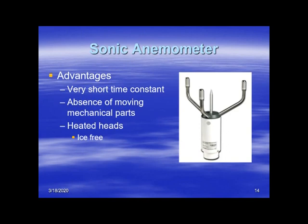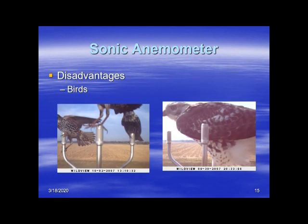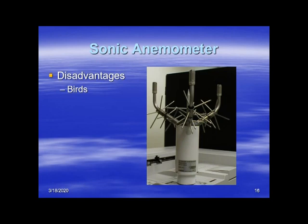One disadvantage of sonic anemometers is birds. This was discovered by the National Weather Service when they were transitioning from cup to sonic anemometers. The solution is to put spikes on the anemometer sensor legs to keep birds off them. In particular, in Grand Forks there's an owl that loves to sit on the sonic anemometer for the center field wind at the airport, so they actually had to install these spikes.